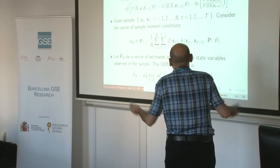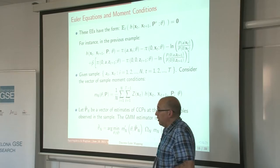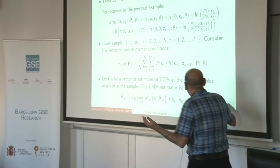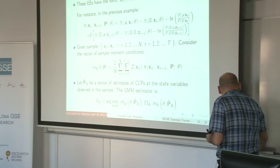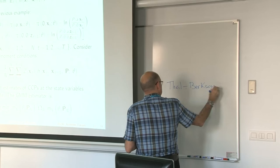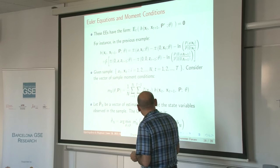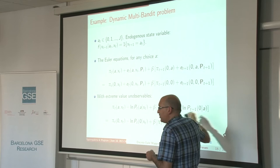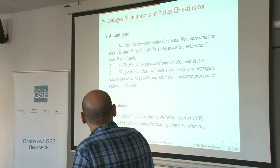The only difference with respect to the standard GMM Euler equation estimator is that we need to estimate the choice probabilities P in a first step. This estimator can be seen as a particular version of the Hotz-Miller estimator, and also as a dynamic extension of the Theil-Bergson estimator developed for static discrete choice models — where we invert the probabilities to get a function of the payoffs and estimate by OLS, which dates back to the 1950s.